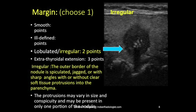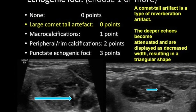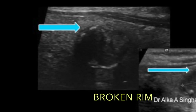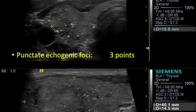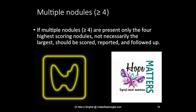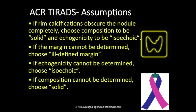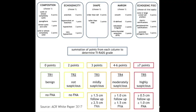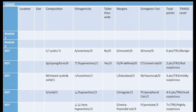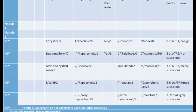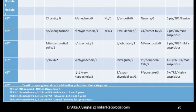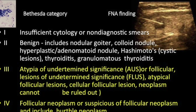For echogenic foci: none present is zero, large comet-tail artifact is zero, macrocalcifications get one point, peripheral broken rim calcification gets two points, and punctate echogenic foci gets three points. For multiple nodules, we score the highest-scoring four nodules and document all information in a chart — I use a Word document format where I copy-paste the relevant features for each category and calculate the total score.